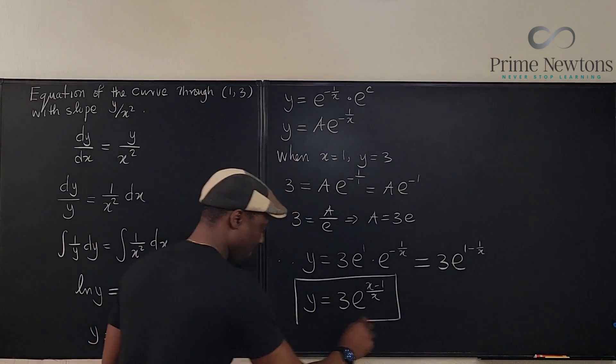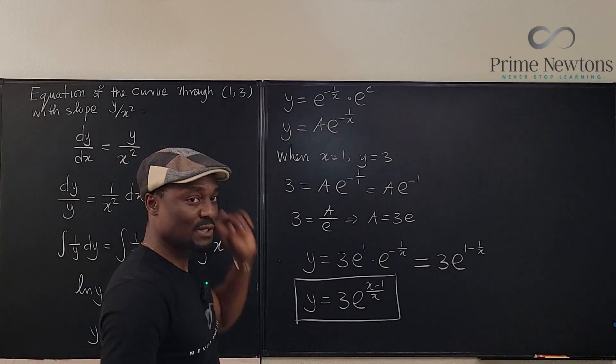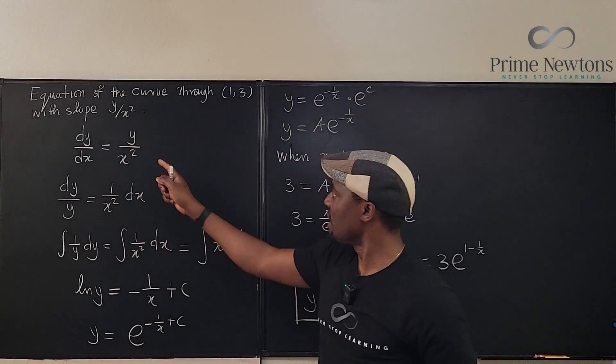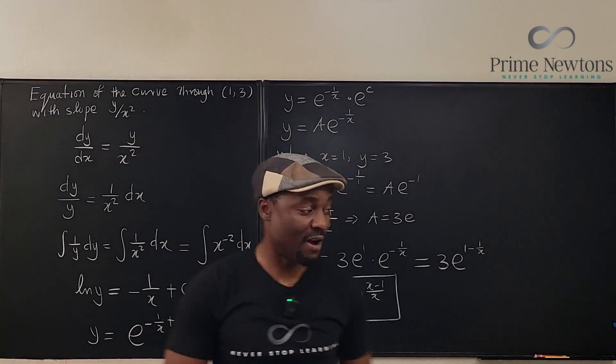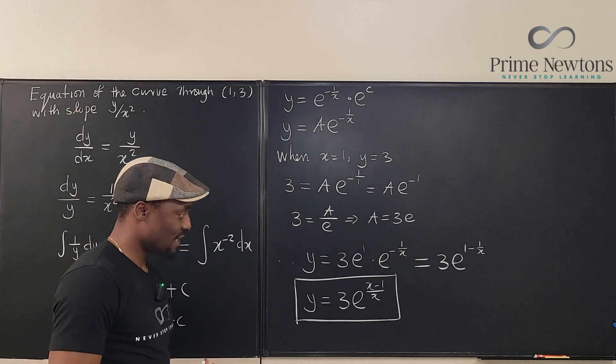This is that curve that passes through this point whose slope is y over x squared. I'm trying not to cover your view so you can see it. It's beautiful.